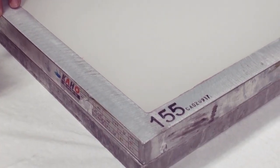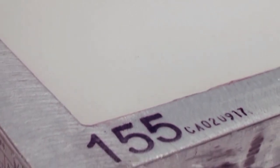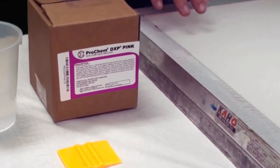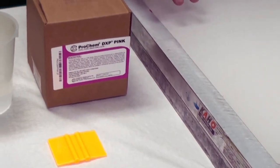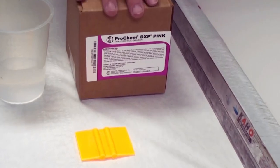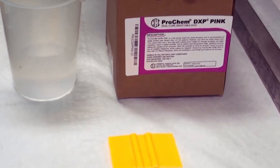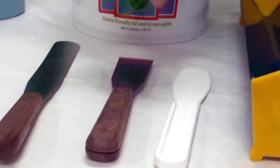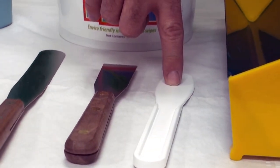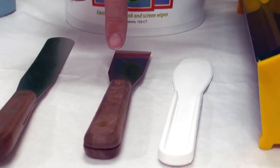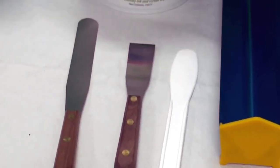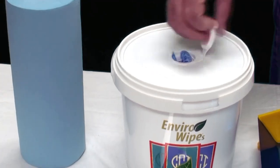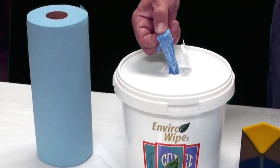So here we have a screen. This is the first part in the step. We're going to use 155 mesh. This is a white mesh, monofilament, plain weave. We're going to use an emulsion which is our DXP which is a dual cure for textile. This is a good quality product. You're going to need a scraper card, water, a scoop coater. I prefer a plastic spatula if you need to scrape or stir. There's also metal spatulas if you need. Then you're going to need a wiper. Maybe perhaps use one of our EnviroWipes which is wet and ready to go or you can use a paper towel.